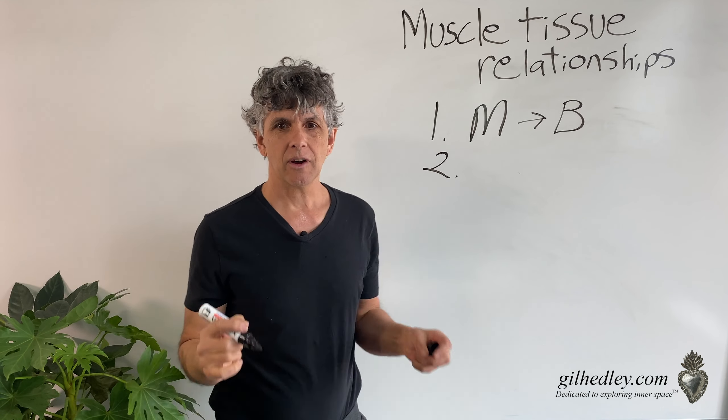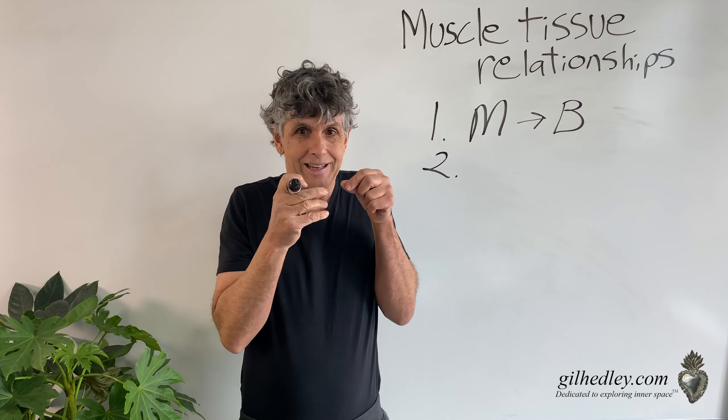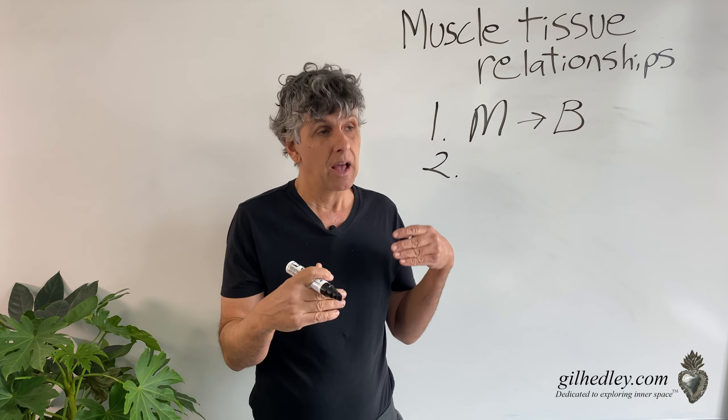Number two: we can have a muscle fiber relating to tendinous matter and then to bone. The muscle fibers of any given muscle can sometimes sort of peter out until all the fascia that was within the muscle and around the muscle forms a cord-like material, or even a sheet which we call an aponeurosis. Those cords and sheets can then directly relate to the bone or sometimes to neighboring muscle tissue — muscle to tendon to bone.